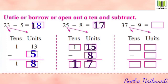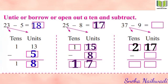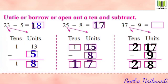Next: 37 minus 9. There are 3 tens, so we lose one ten. That loose 10 goes towards the 7 units, making 17 units. Now 17 minus 9 equals 8, and 2 tens remain. So 37 minus 9 equals 28. Okay children, understood? Thank you students.